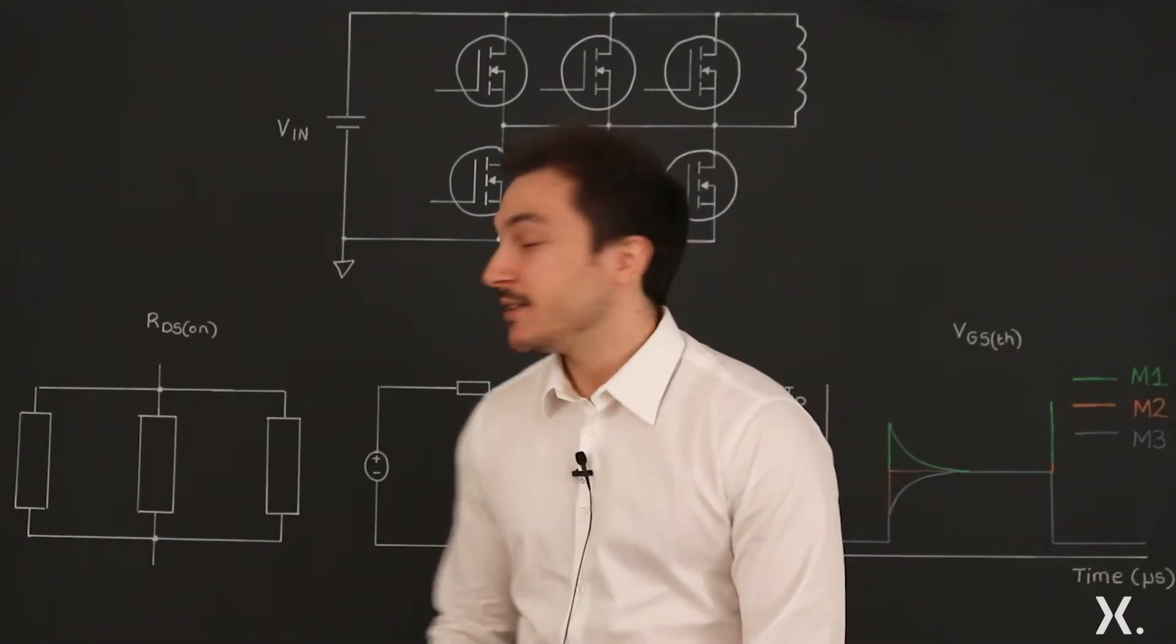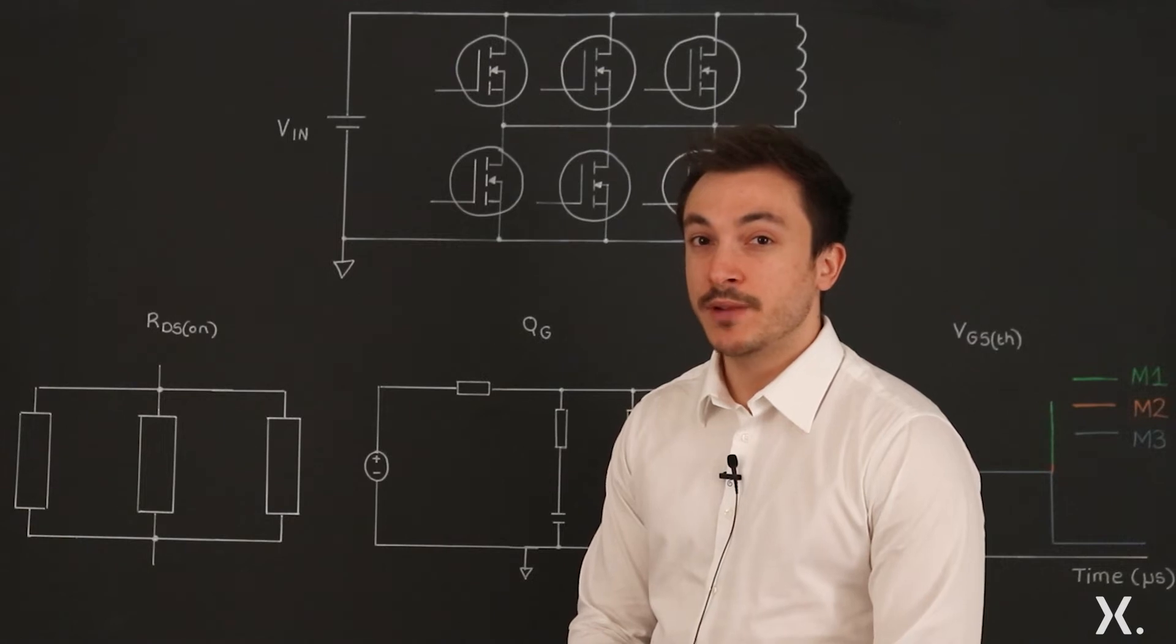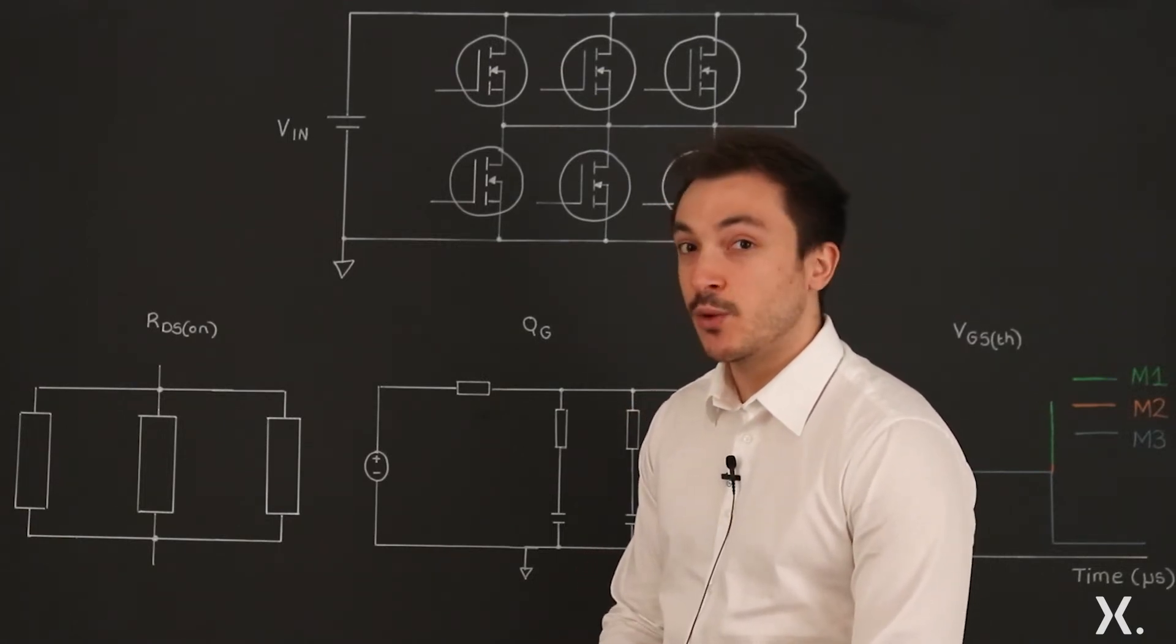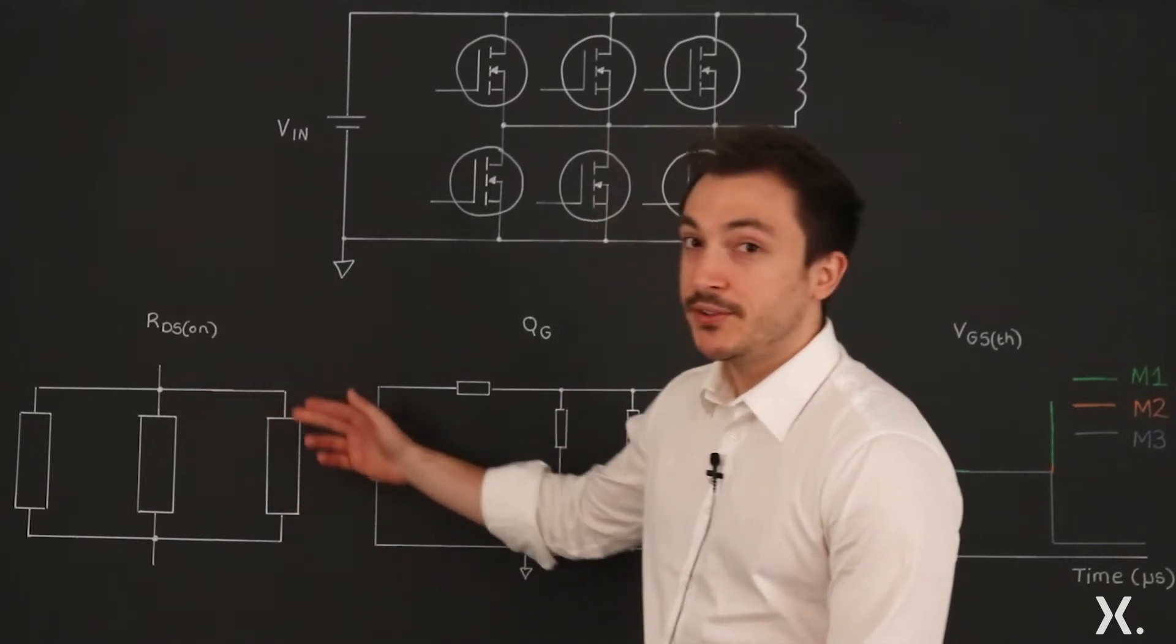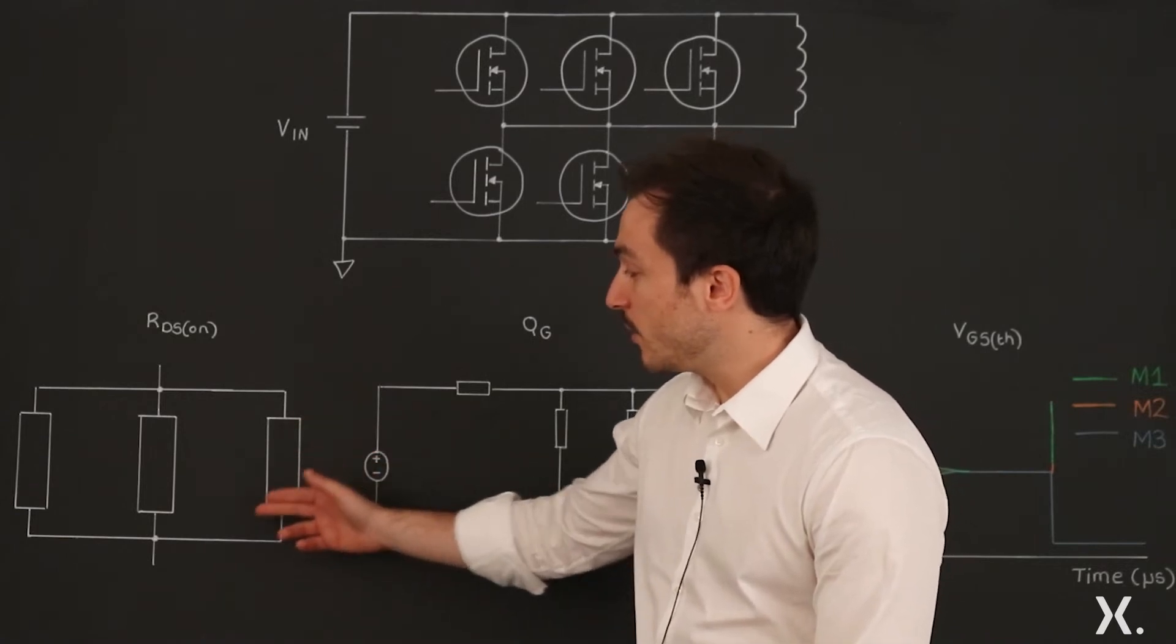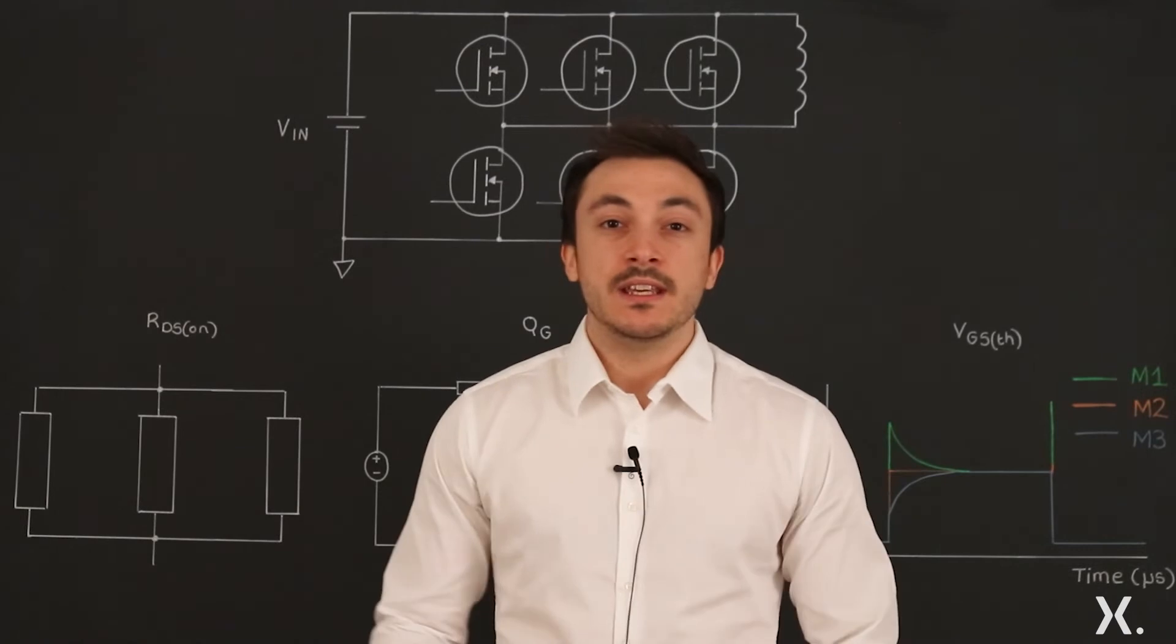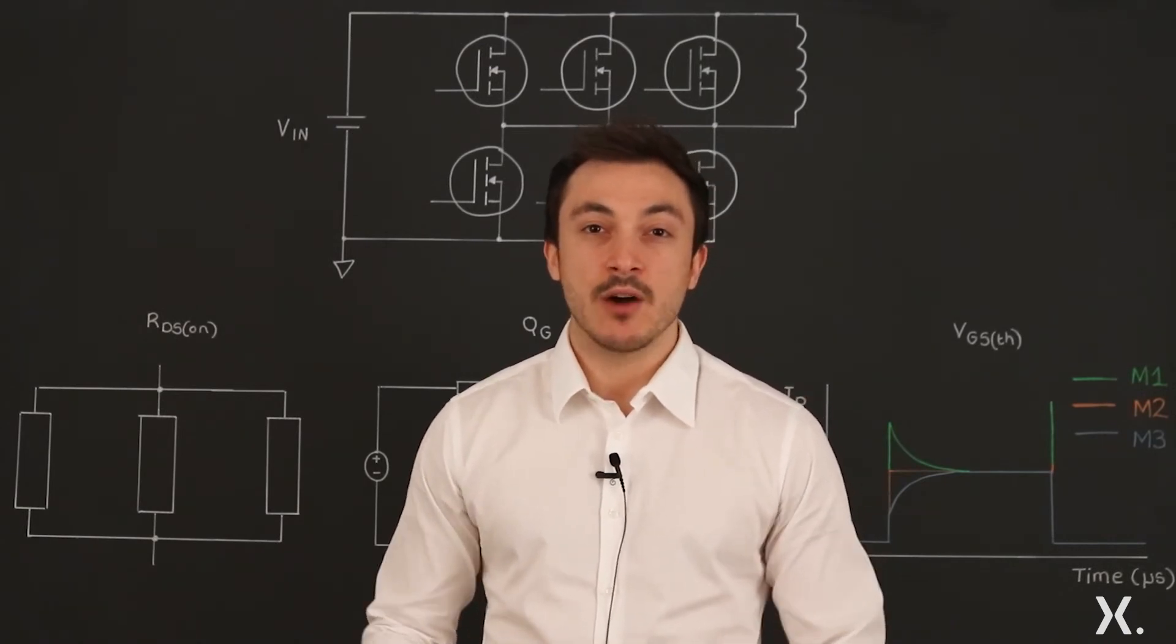Now let's start with RDS(ON). RDS(ON) has the lowest impact of all three and affects mainly the conduction or static operation. In this case, MOSFETs behave as simple resistors; therefore, current will flow mainly through the lowest resistance one. However, the positive temperature coefficient of the resistance helps to balance out the current.